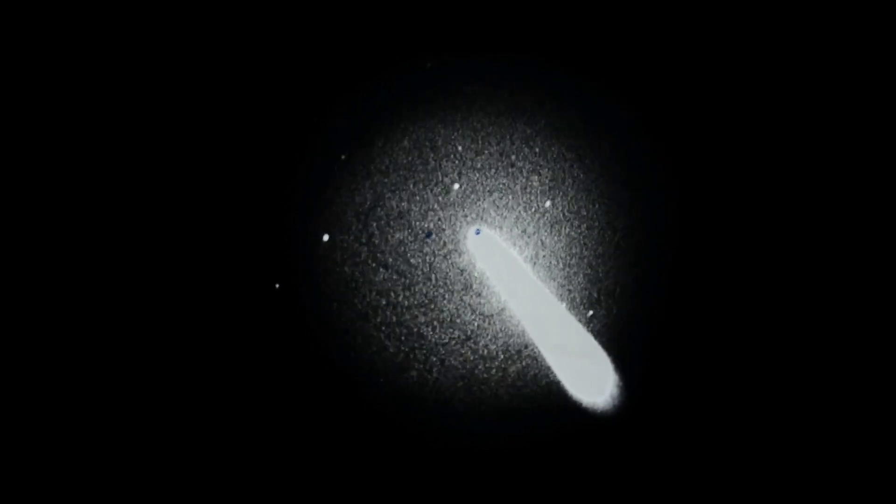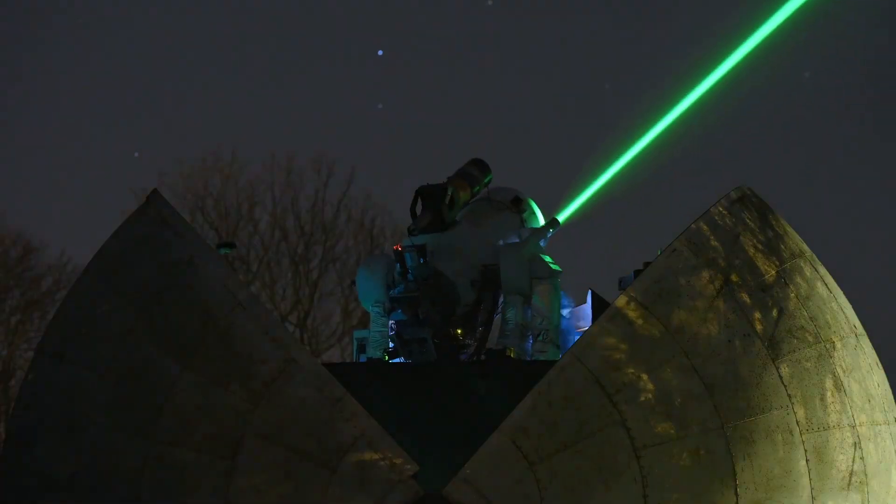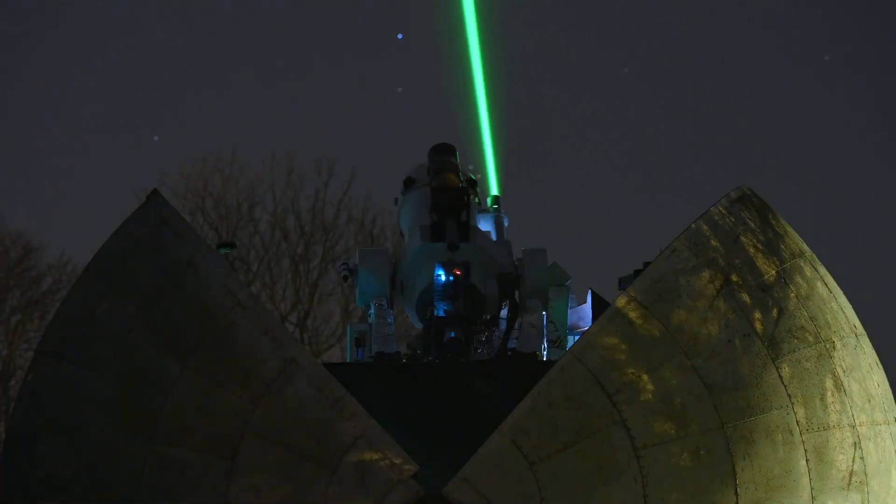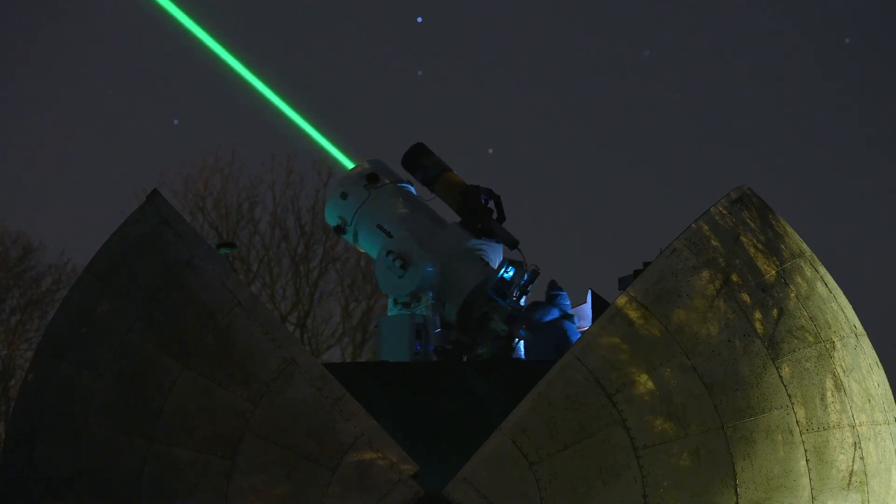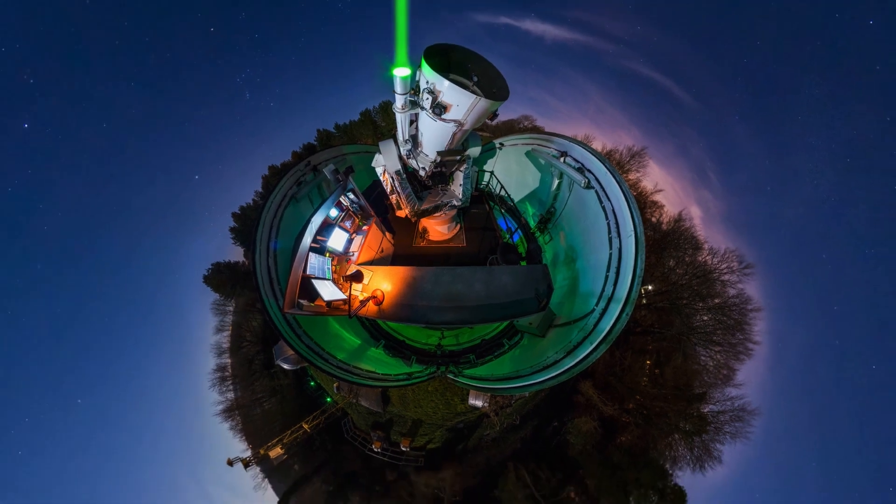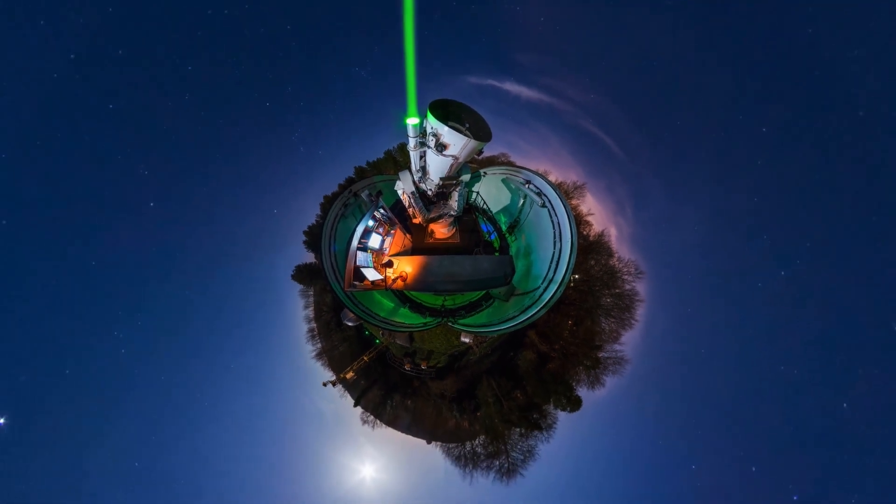These measurements have not only confirmed the Moon's retreat, but have also revealed subtle variations in its rate of recession. These fluctuations can be caused by factors such as changes in Earth's rotation, shifts in ocean tides, and even the gravitational effects of other planets in our solar system.